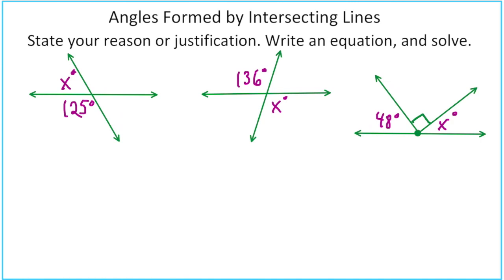Okay, so the first problem, the relationship between x and 125 degrees, that's a linear pair. You could also write line equals 180. And so we can go ahead and write an equation, x plus 125 equals 180. And then that means x is 55.